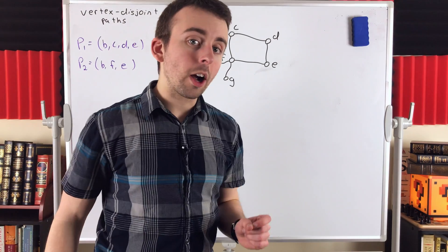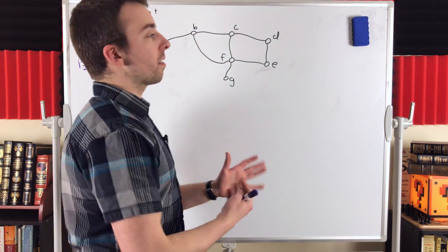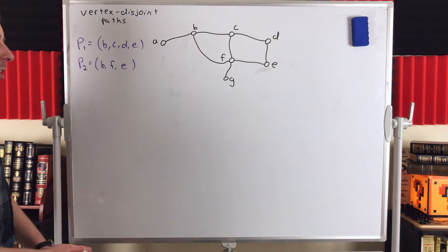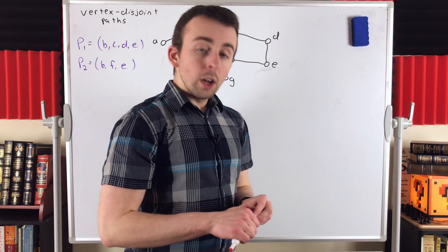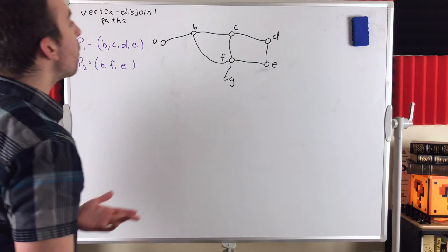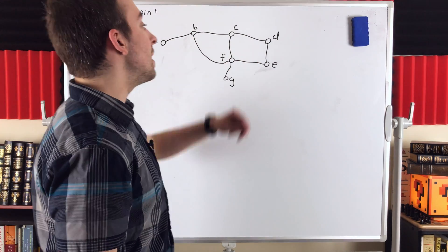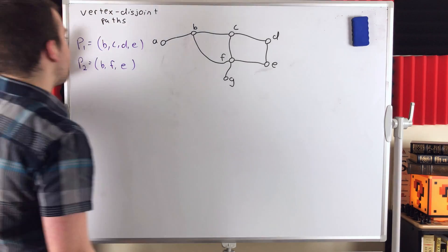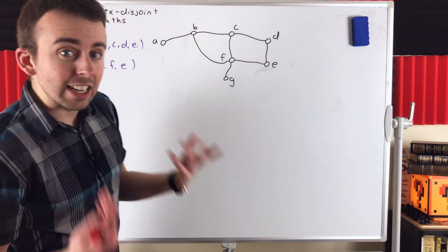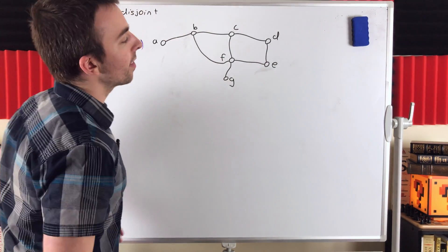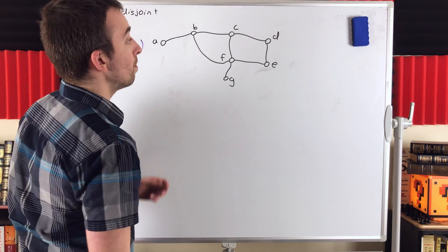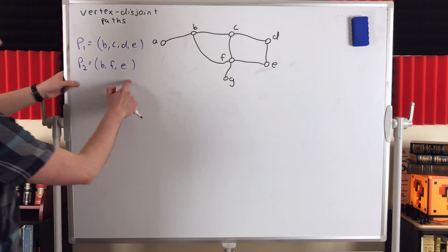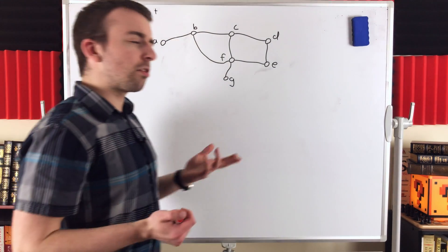Now, one more thing before we call it a day, and this is the most important idea I want you to get from this lesson. What would you say if I asked you how many internally disjoint B-E paths there are in this graph? At first, you might think: well, we've got these two paths, P1 and P2, which are internally disjoint B-E paths, and a quick observation confirms that we can't add any more internally disjoint B-E paths to this collection, so maybe the answer is two.